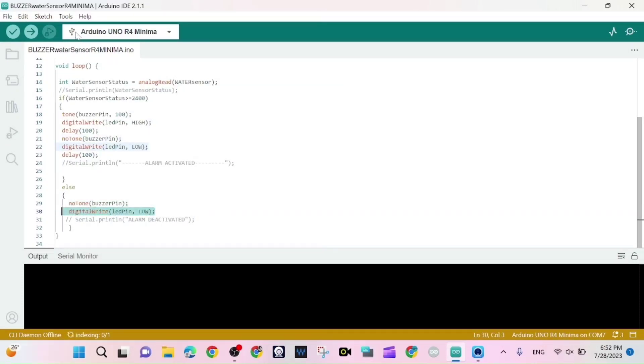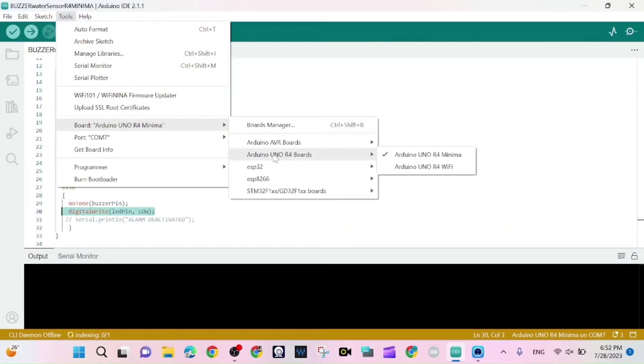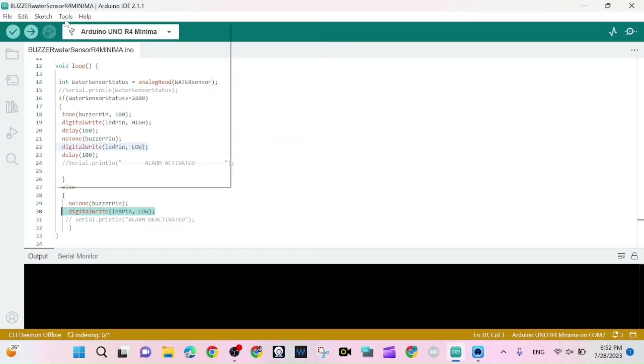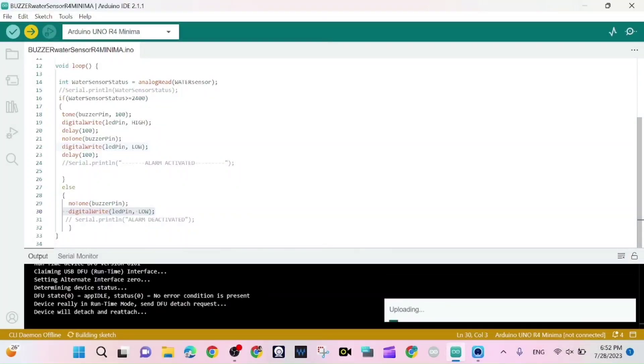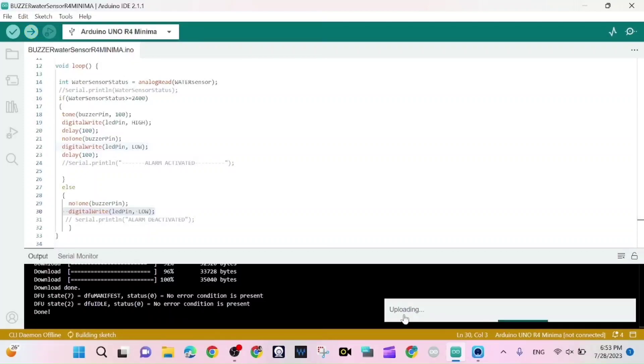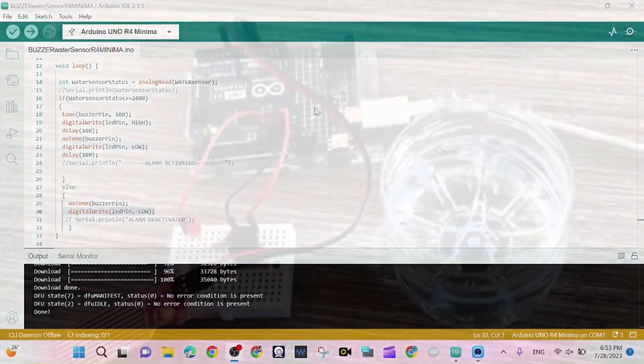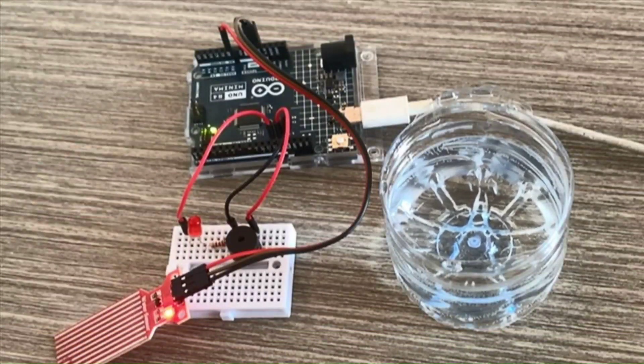Now we choose the board on tools. Our port is COM7, and we upload the program. The sketch will be available in the description of this video. Please follow along. We upload the sketch, and it's done. Now we test our project.